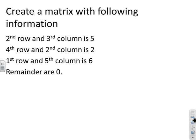Here's an example then. We want to create a matrix with the following information. We know the 2,3 element, we know the 4,2 element, and we know the 1,5 element. And all the others are zero.